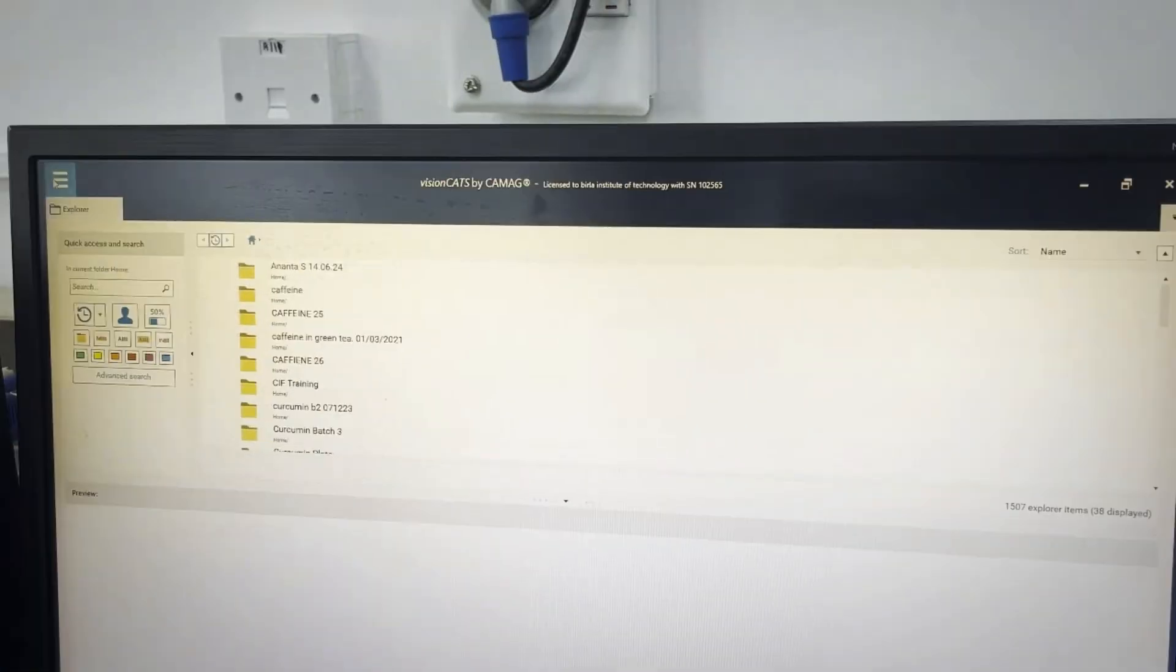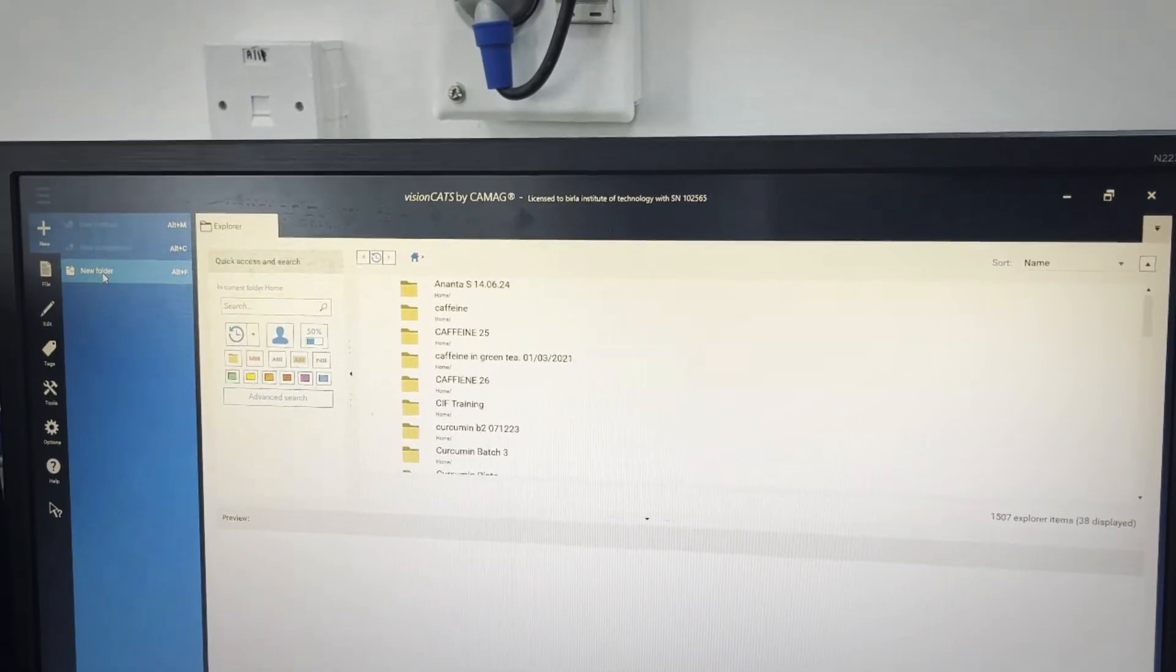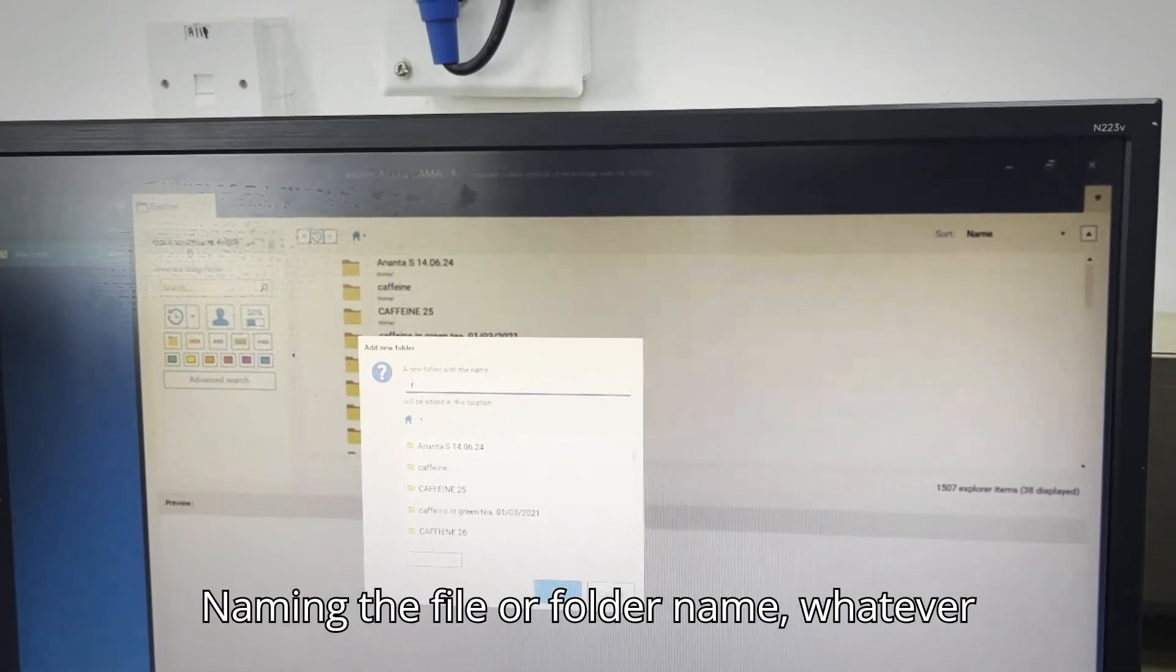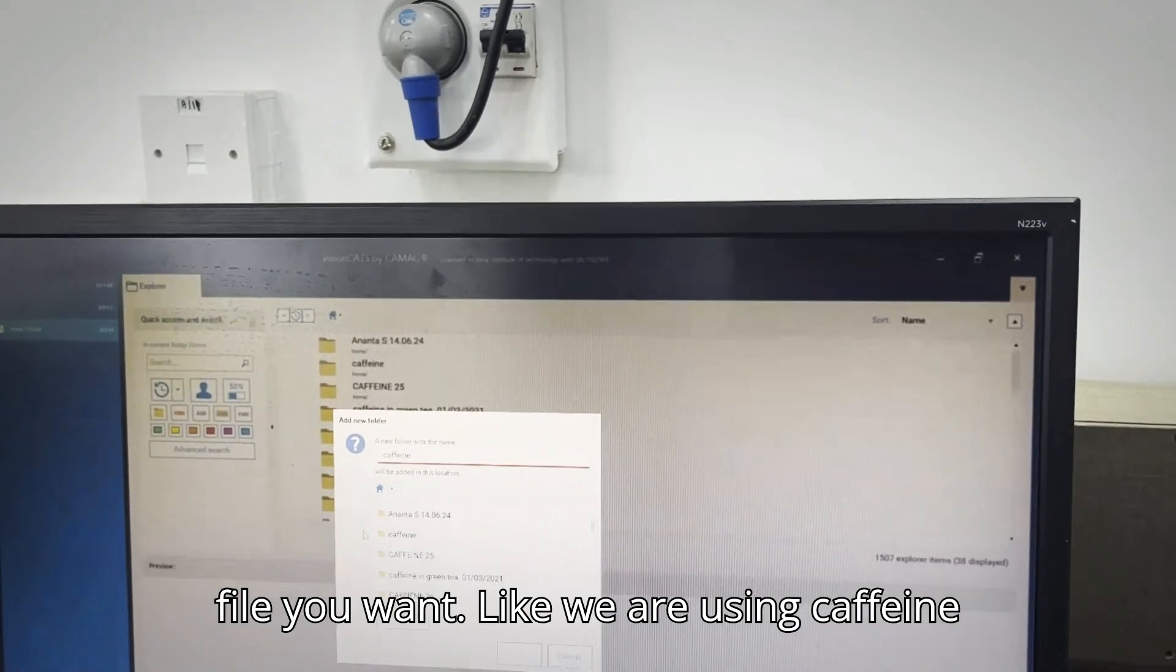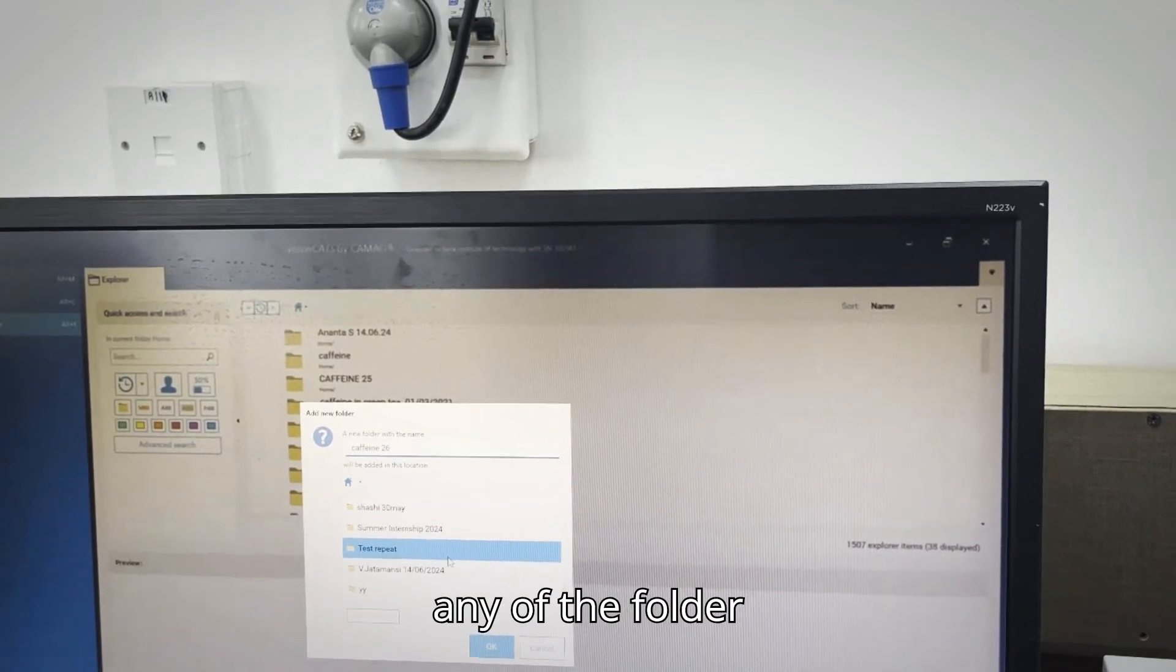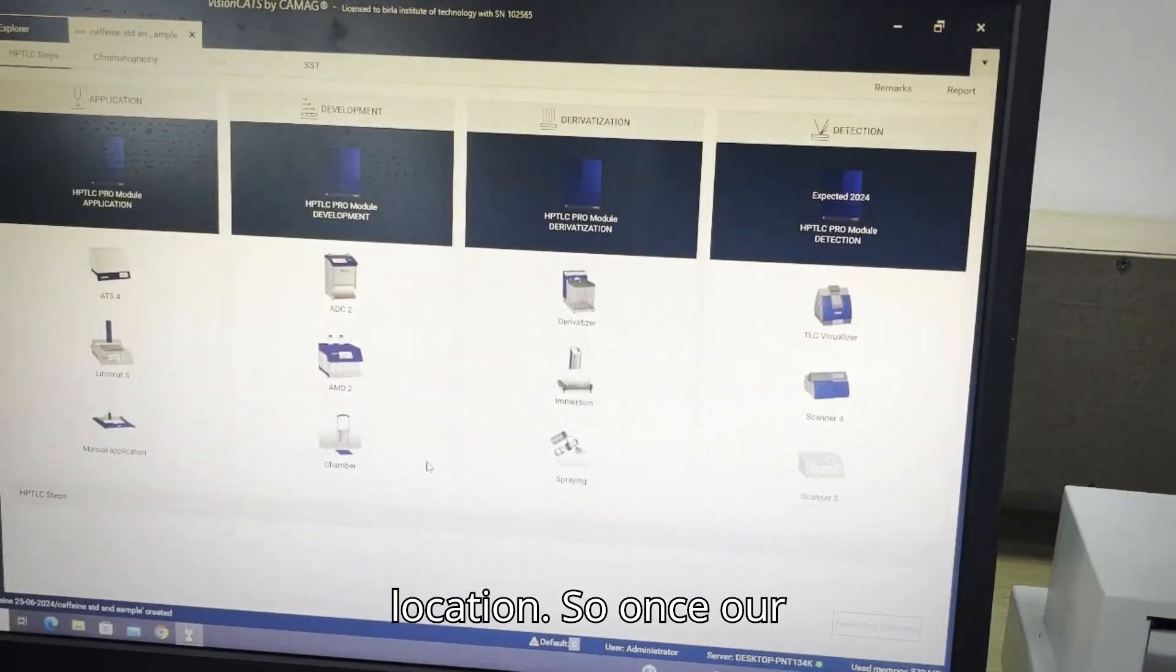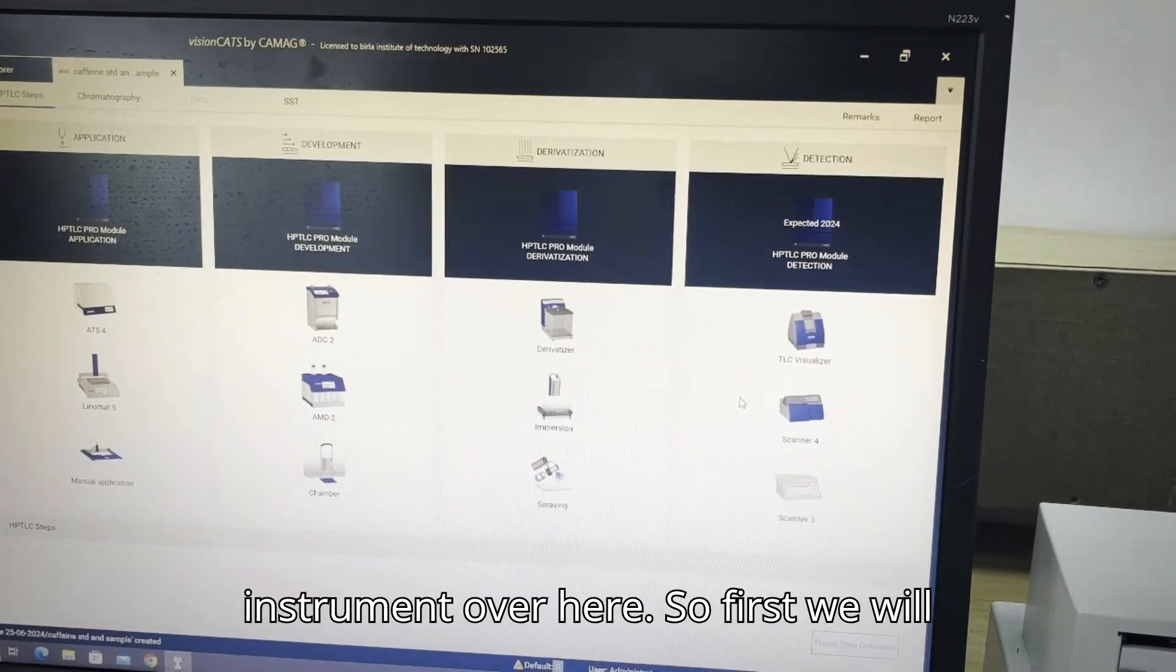After that we will open Vision CAD software. In there we click on new folder. Then we will go to the new method. We will name the file, whatever file we want. Like we are using caffeine as a sample, so we have written caffeine here. We click on any of the folder or file where we are going to save the location. Once our file is saved, we will see the instrument over here.